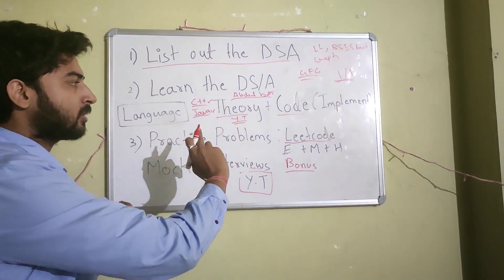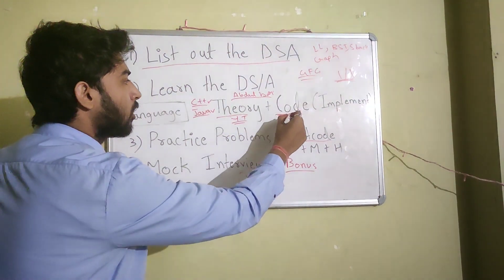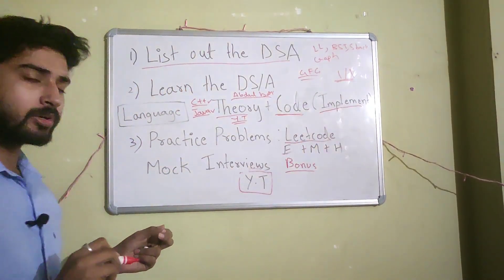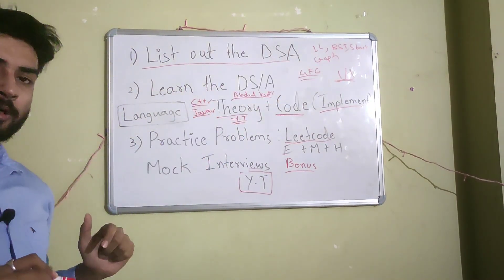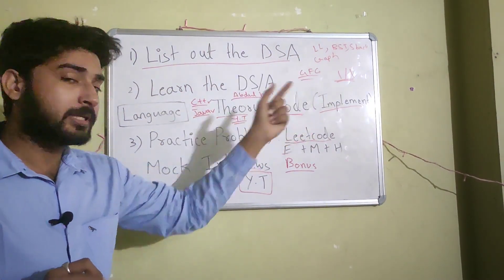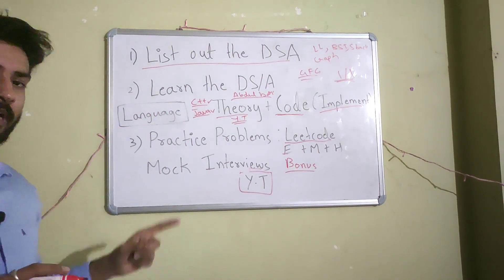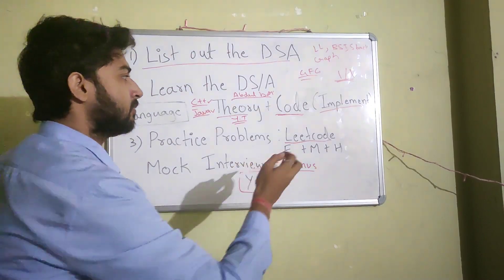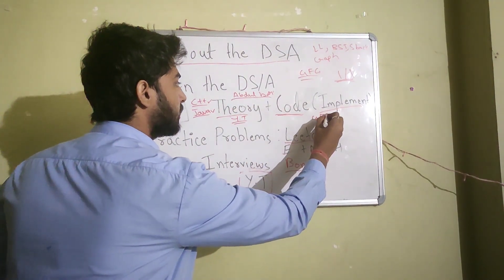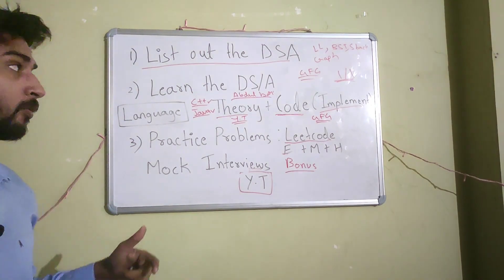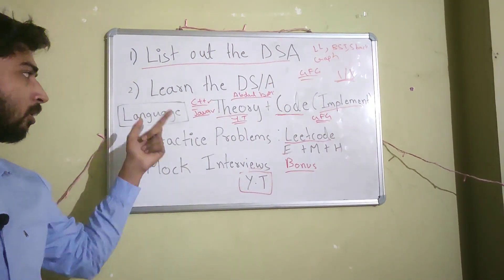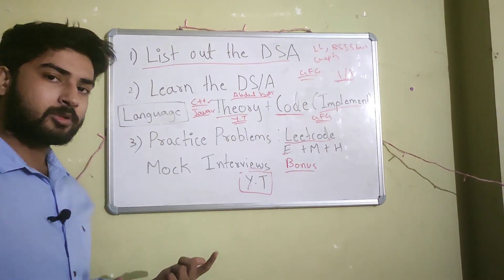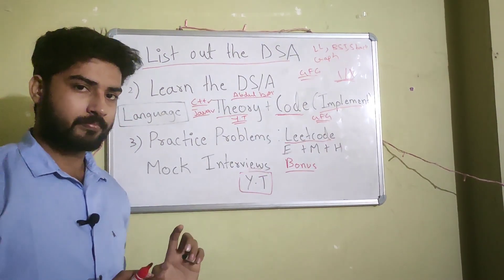Once you have learned the theory, you need to be able to code or implement the data structure. For example, if you are on linked list, you learned the theory and now you need to implement linked list in whatever programming language you chose. Try to implement it yourself. If you are not able to, go on GeeksforGeeks — it has the implementation of every data structure and algorithm in all languages: C++, Java, C, Python. Take a hint if needed.